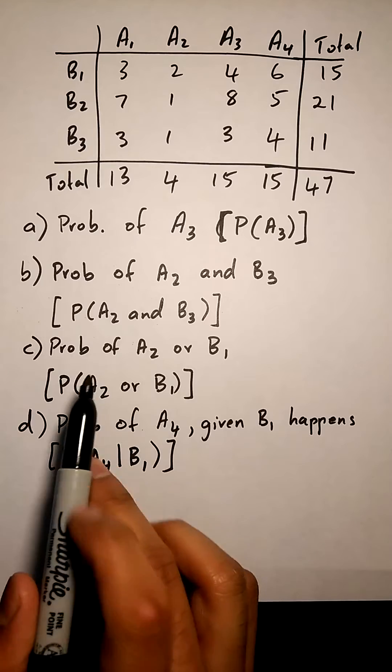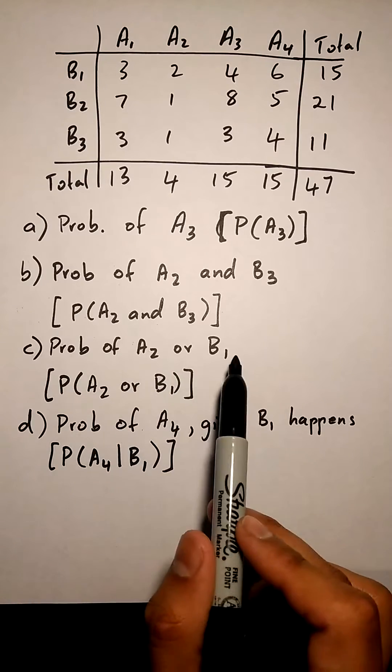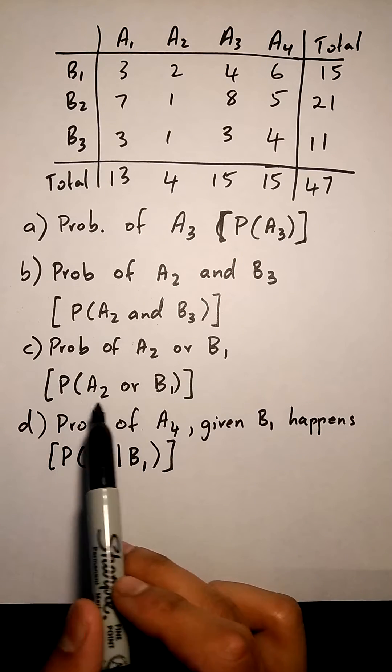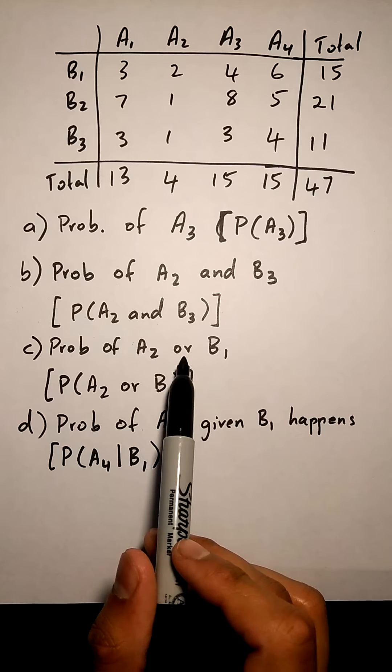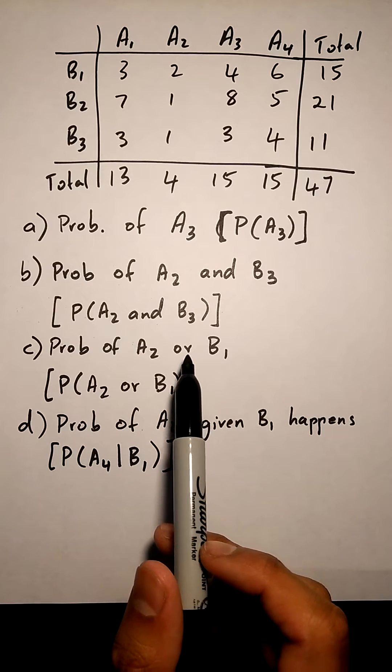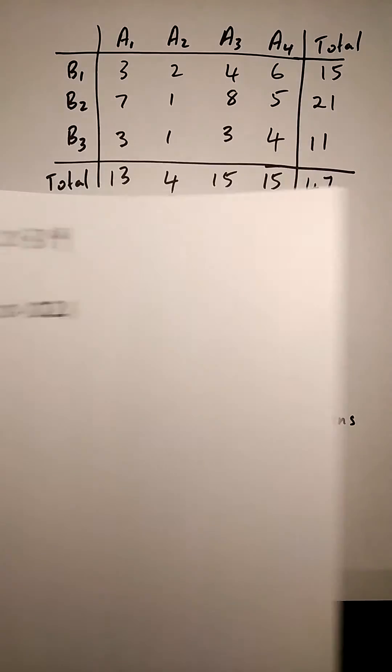In part c of the question, they're asking us the probability of A2 or B1. Again, they could write it like P(A2 or B1). Now when we're doing the probability with 'or' in a contingency table, we have to remember that these are non-mutually exclusive events.